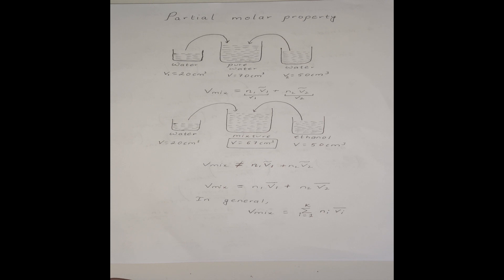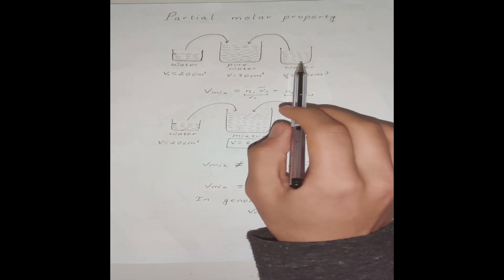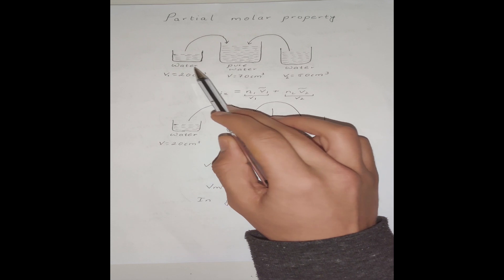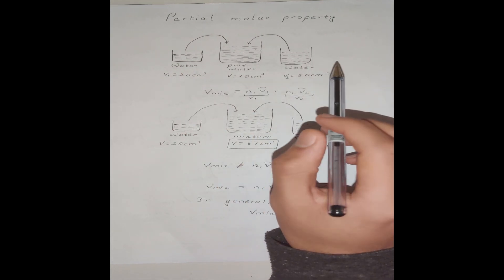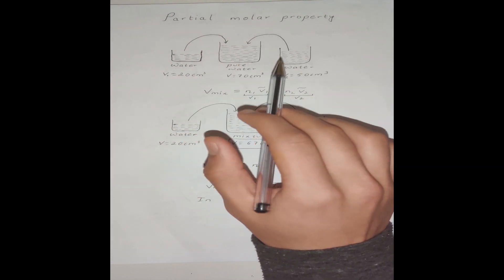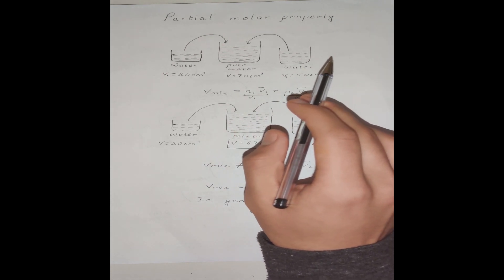Before finding the way to determine the partial molar property, let's talk about the partial molar property itself. To describe this I'm going to talk about two experiments. In the first experiment I have two beakers filled with pure water — the first beaker has water with volume 20 cm³ and the next one has water with volume 50 cm³. If I add them up, the final volume is going to be 70 cm³ obviously.